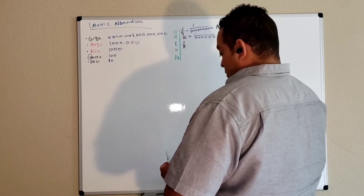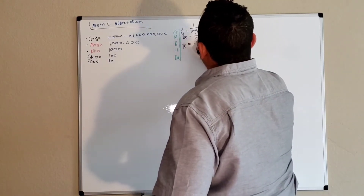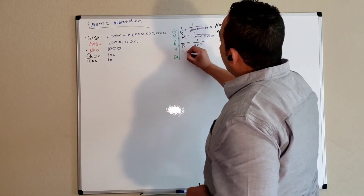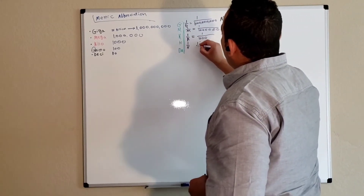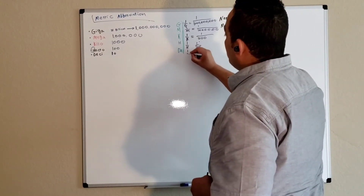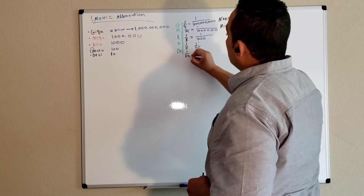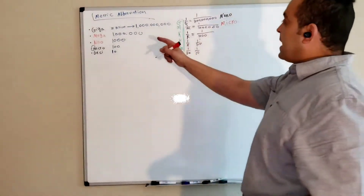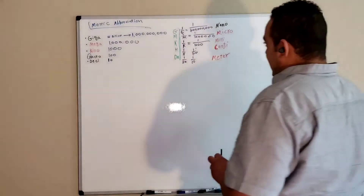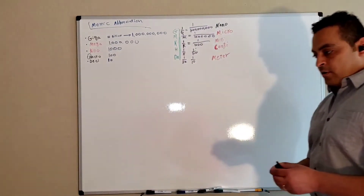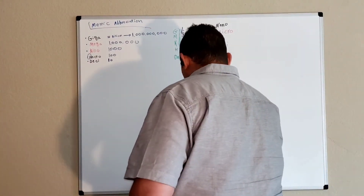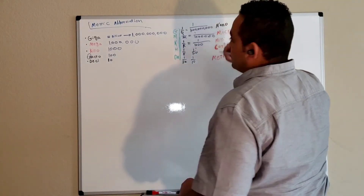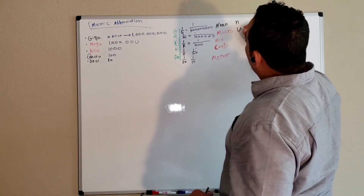One over kilo equals one over one thousand. We also have one over hecto which is one over 100, and one over deca which is one over 10. One over kilo, or one over thousand, the abbreviation for this is milli. For nano we use the letter N, and for micro we use the Greek mu symbol.